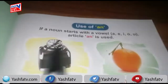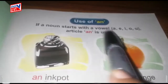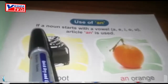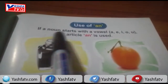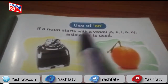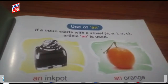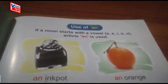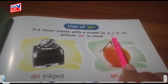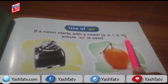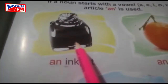The use of 'an': if a noun starts with a vowel, article 'an' is used. In the previous lecture we have already discussed about nouns, vowels, and articles. There are five vowels that we have already discussed — the first one is A, E, I, O, U. If a noun starts with a vowel, article 'an' is used.